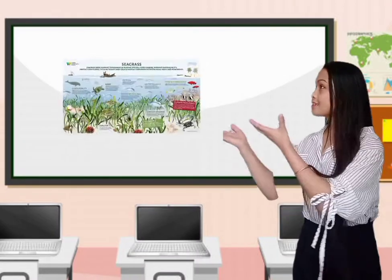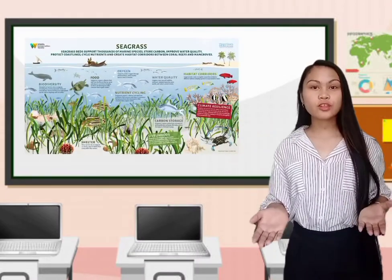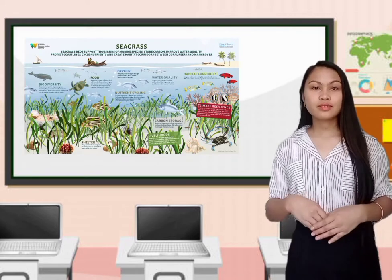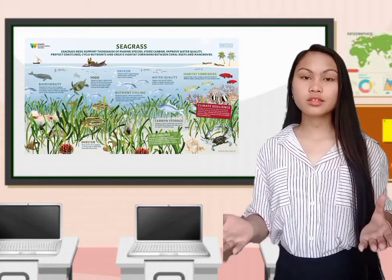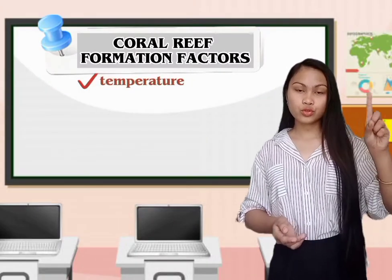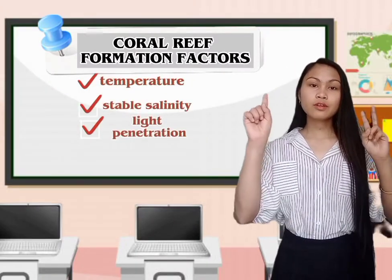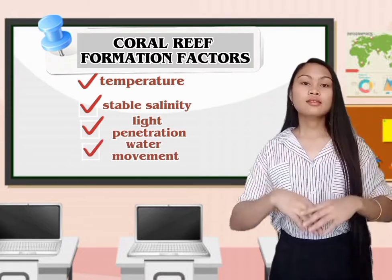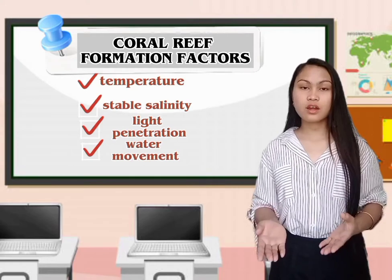Coral reefs are important as they serve as breeding grounds or nurseries for small, growing fishes. The producer, like the seagrass, provides food and nutrients to the consumers. These consumers include sea turtles, crabs, fishes, and other marine animals. There are also factors that contribute to the formation of coral reefs: temperature, stable salinity, light penetration, and water movement.